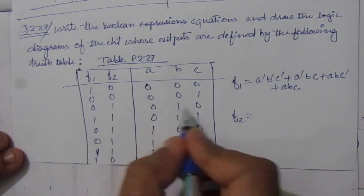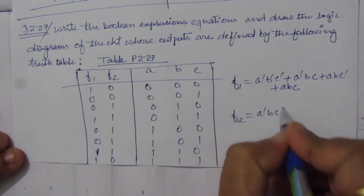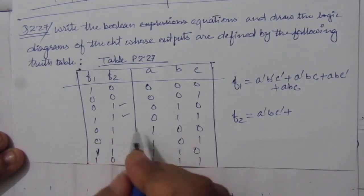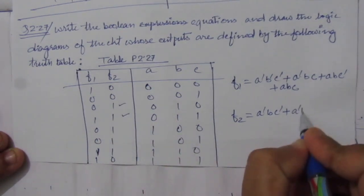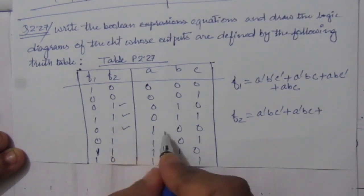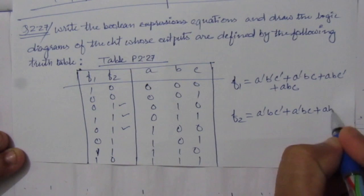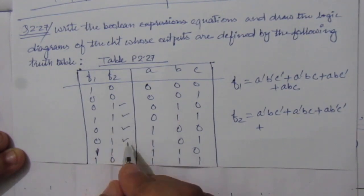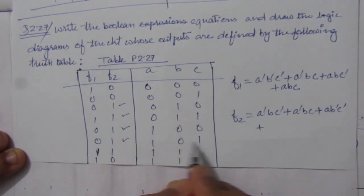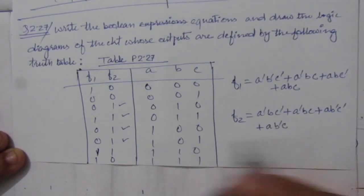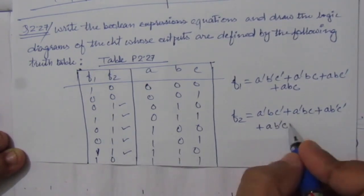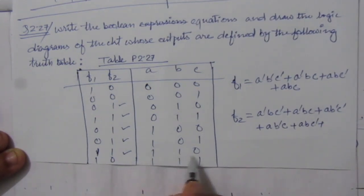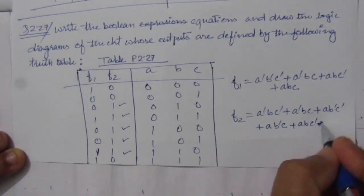Next we have f2. F2 equals: a-bar b c-bar, plus a-bar b c, plus a b-bar c-bar, plus a b-bar c, plus a b c-bar.